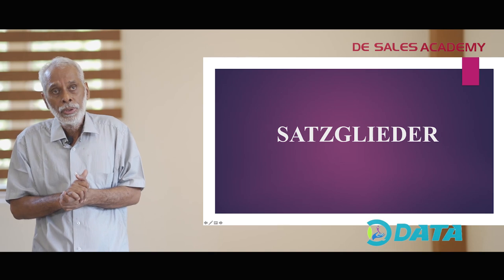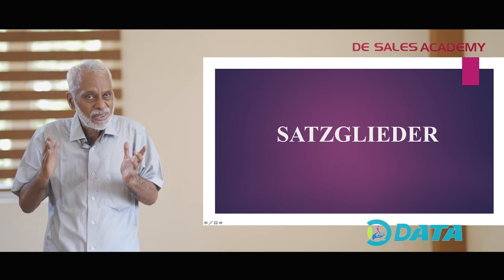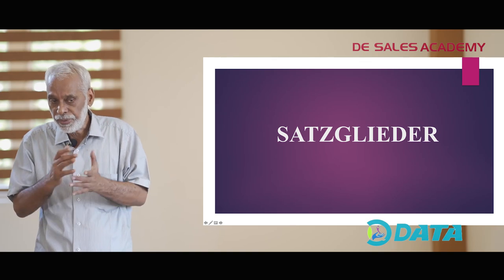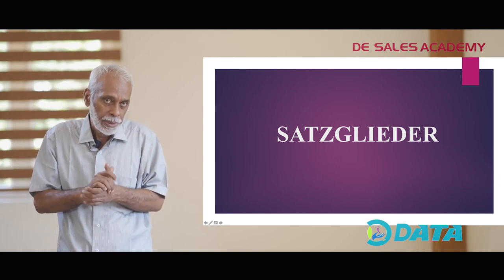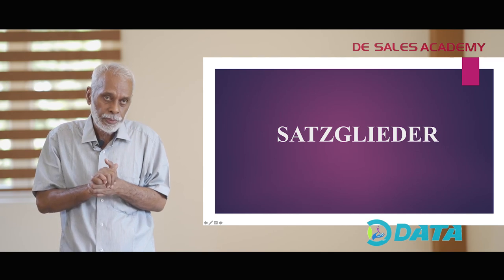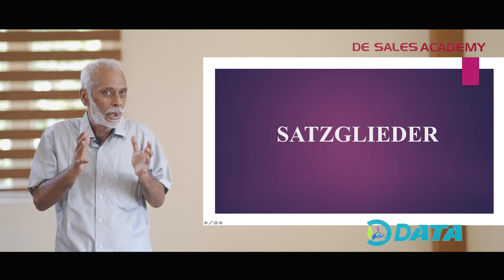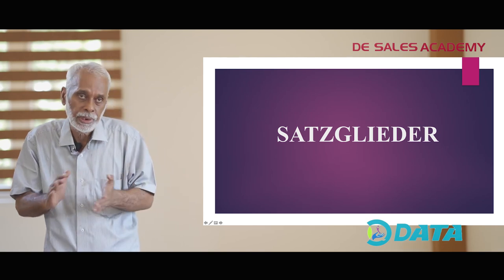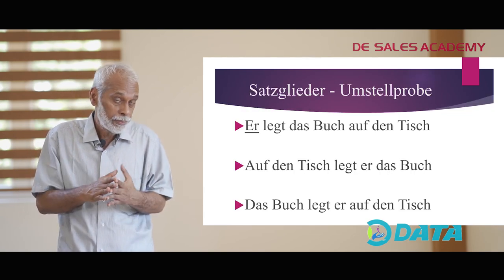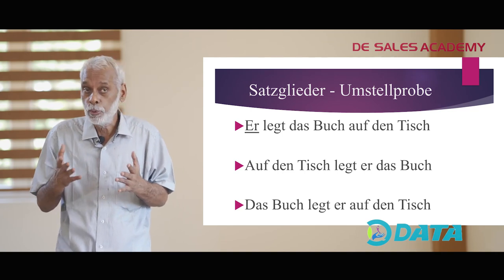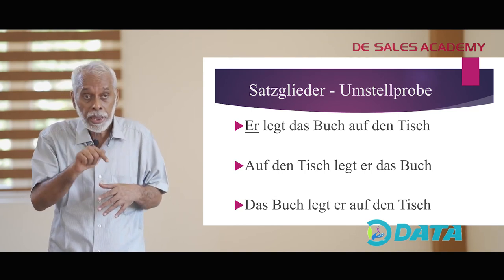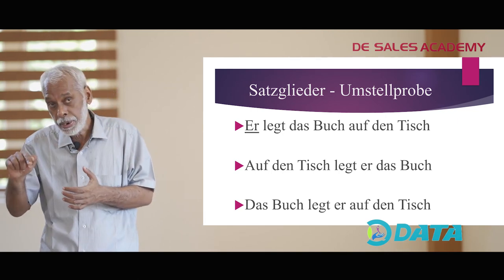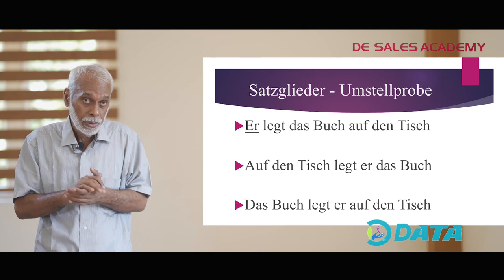When we look at the different Satzglieder in a Satz — the different parts of a sentence — then you will understand about the correct position of the Satzglieder in a sentence. For example, in your basic German you would have learnt: Er lernt Deutsch — he learns German.